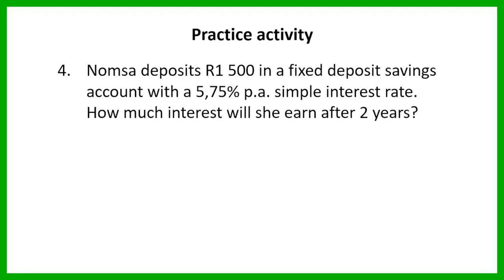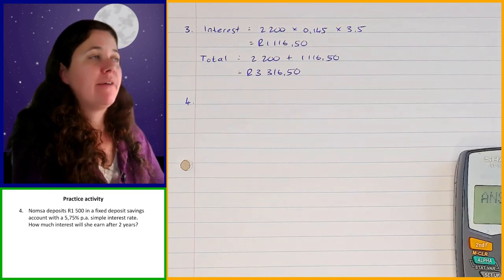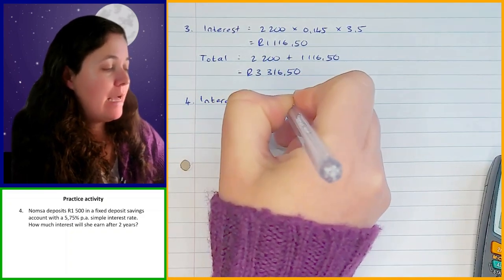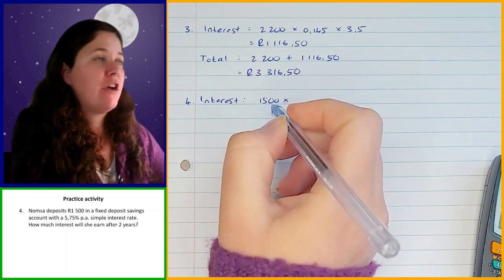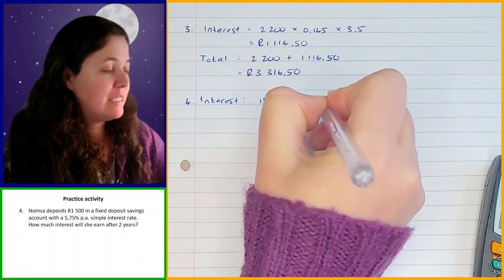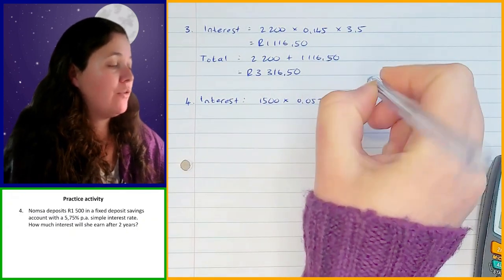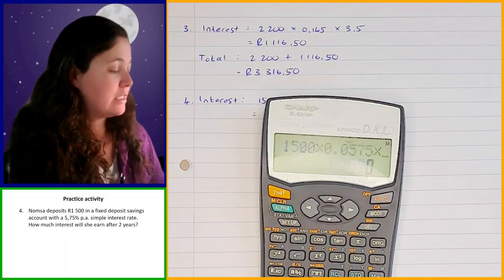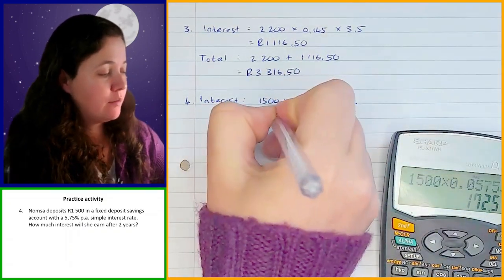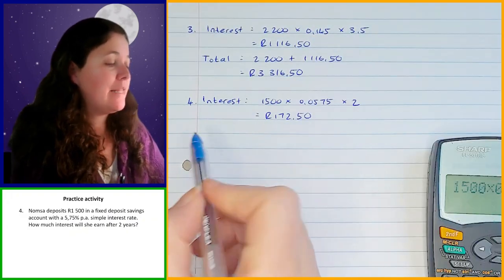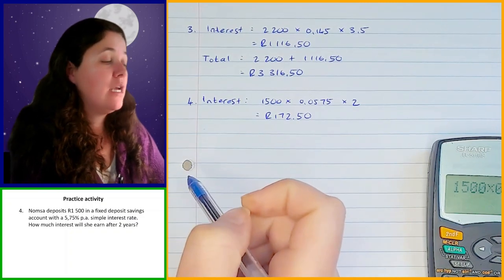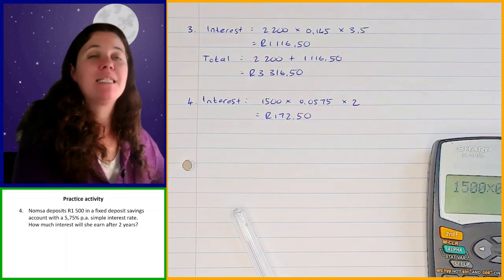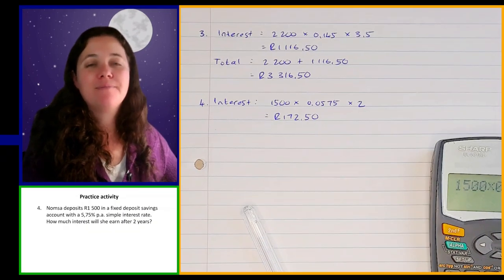To work out the interest we take 1,500 and multiply it by the interest rate, which is 5.75% per annum simple interest — so 0.0575 — and we multiply that by the number of years, which is two. So 1,500 times 0.0575 times 2 gives you 172 rand 50. That is the total amount of interest that she earned. In this question we only had to work out the interest, not the total amount after two years.